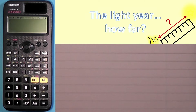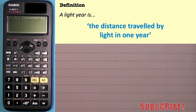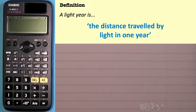In this video we're going to be talking about the light year. A light year is the distance traveled by light in one year. So it's a distance, measured in meters, not a time, even though it has the word 'year' in it. It is, as we said, a distance.